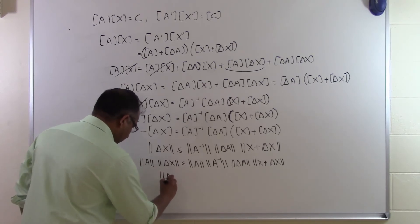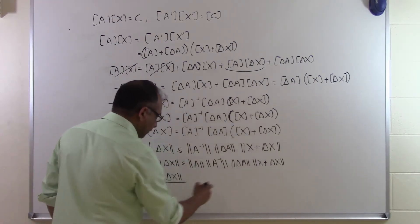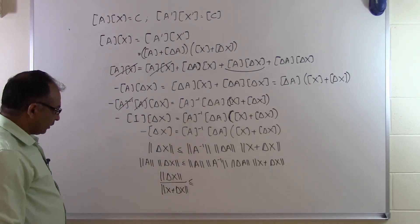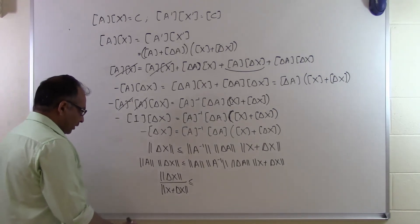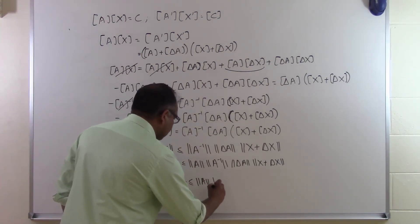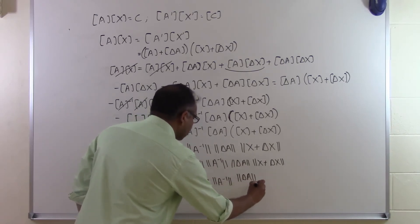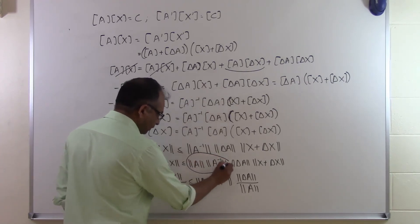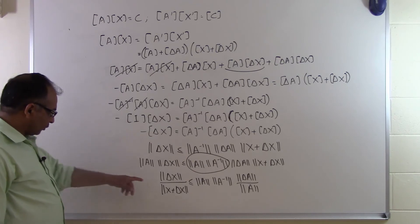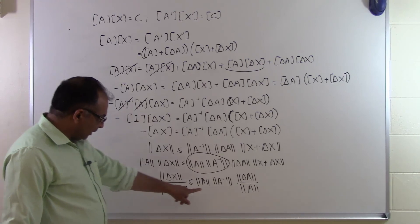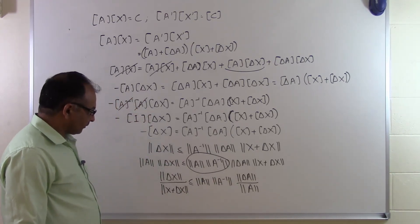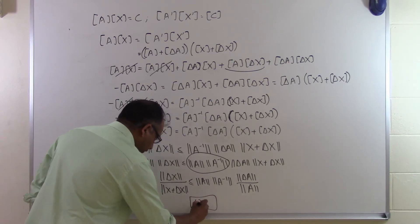Now we do a little manipulation: we take the norm of (X plus delta X) to the left-hand side. Since we are using positive numbers throughout, the inequality direction does not change. This gives us norm of delta X divided by norm of (X plus delta X) is less than or equal to norm of A times norm of A inverse times norm of delta A divided by norm of A. The reason we multiplied by norm of A was to obtain the condition number. So the relative change in the solution vector can be amplified by as much as the condition number of the coefficient matrix. That is the proof of this theorem.